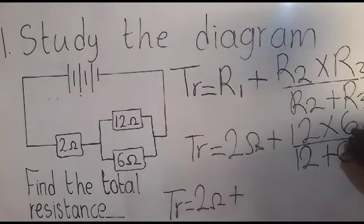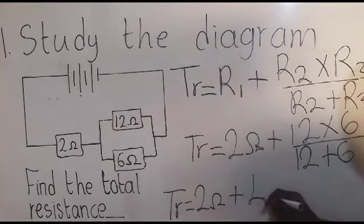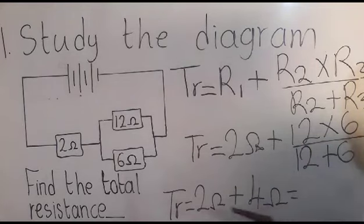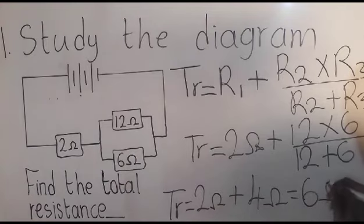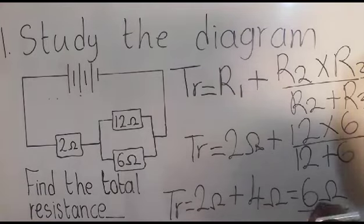18 into 72 is going to give you 4 here. So 4 ohms like this. So what is 2 ohms plus 4 ohms? That is going to give me 6 ohms, which is the answer there.